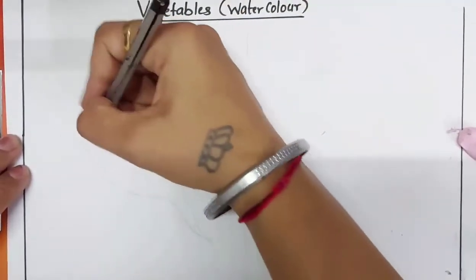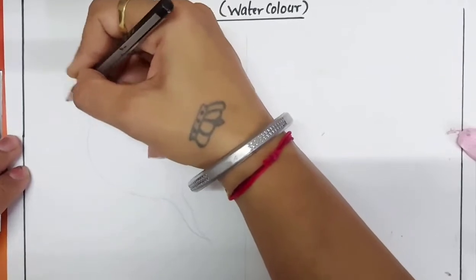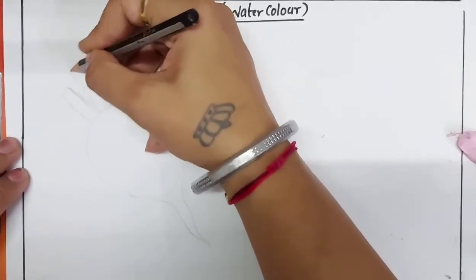Now draw stems on the top of the turnip like this.